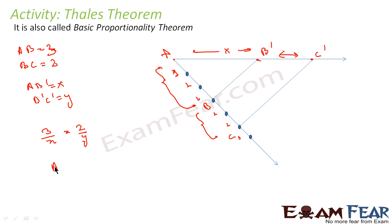That is a, b by a, b dash will be equal to b, c by b dash, c dash. This is what you will observe.